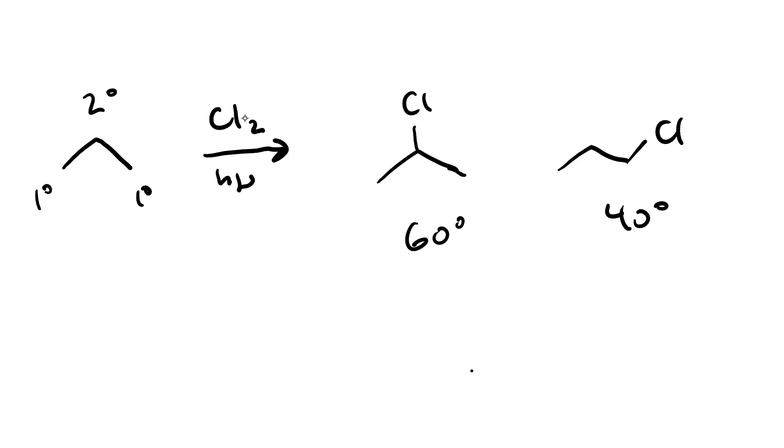What if we wanted only the primary one? Should we use bromination? Bromination will give us more like 90% secondary and 10% primary.